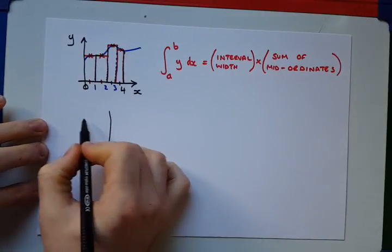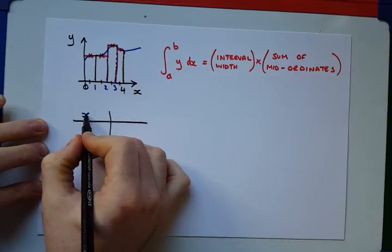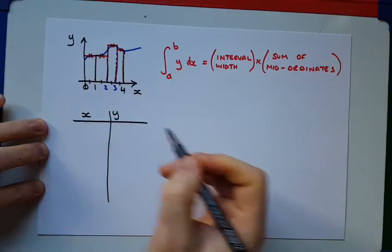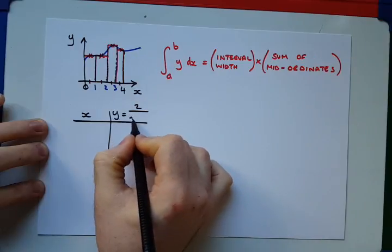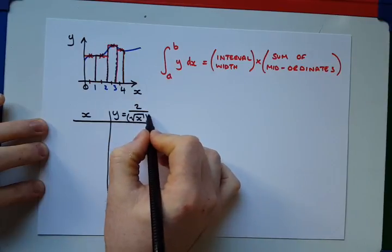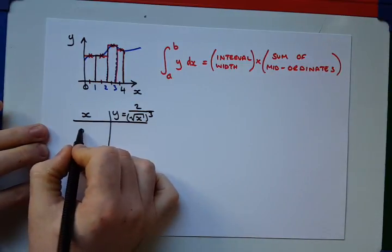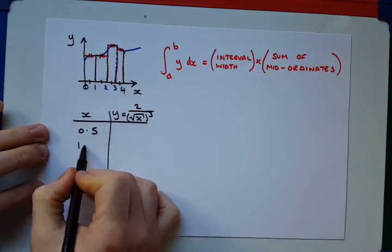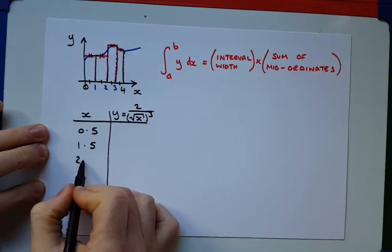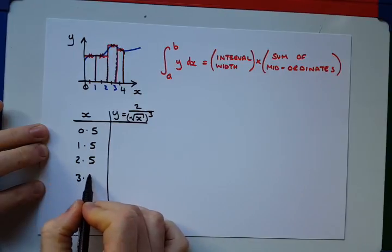So, we create a table for the values of x and the values of y. So, in our case, y is equal to 2 over square root of x cubed. So, our midpoints of our intervals, as I said, are 1.5, 0.5, 1.5, 2.5, and 3.5.